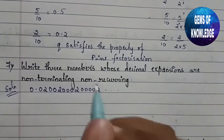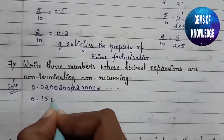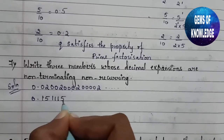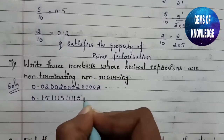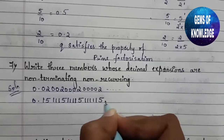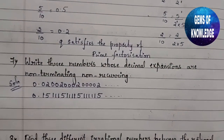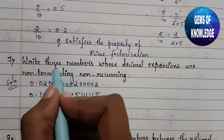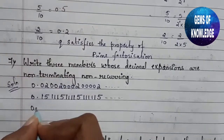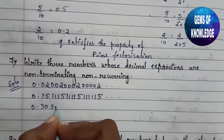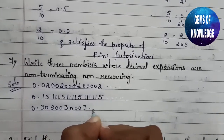Similarly, a second example: 0.1511511115... — increasing the number of 1s between each 5. This is also non-terminating non-recurring. A third example: 0.3033303330... — increasing the number of zeros after each 3. So all three numbers are non-terminating and non-recurring.